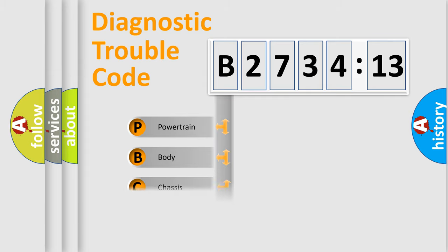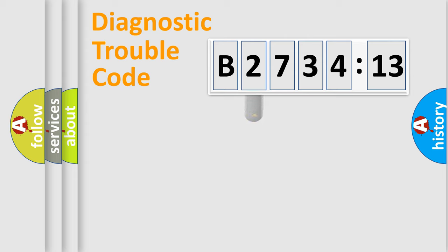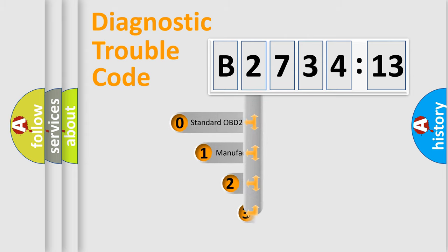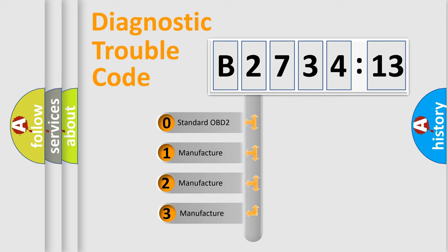We divide the electric system of automobile into four basic units: Powertrain, Body, Chassis, and Network. This distribution is defined in the first character code.